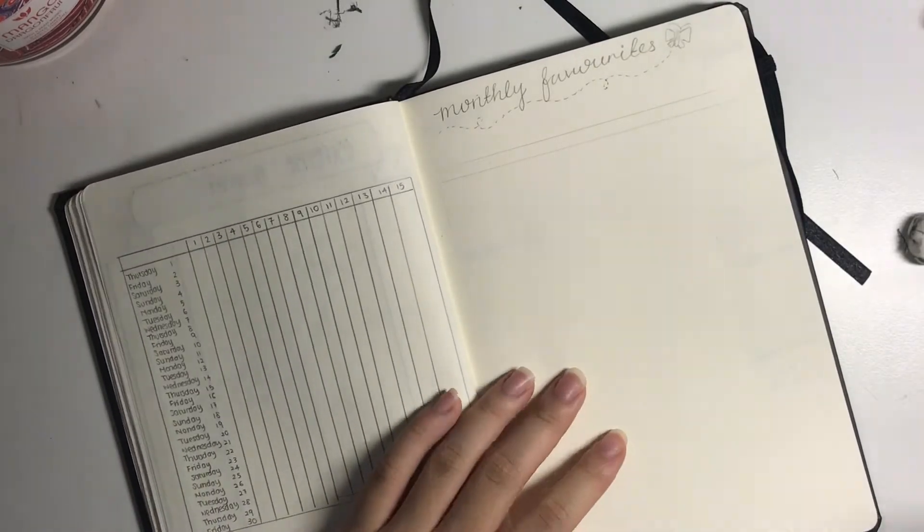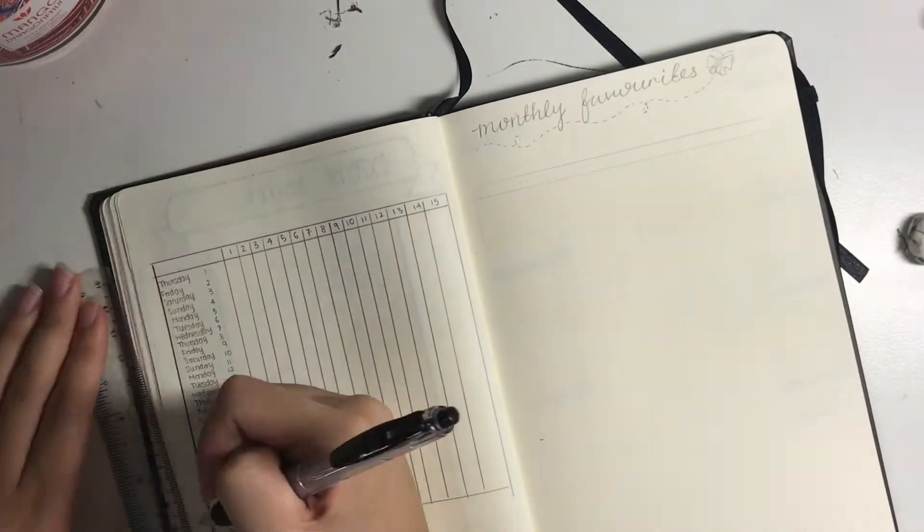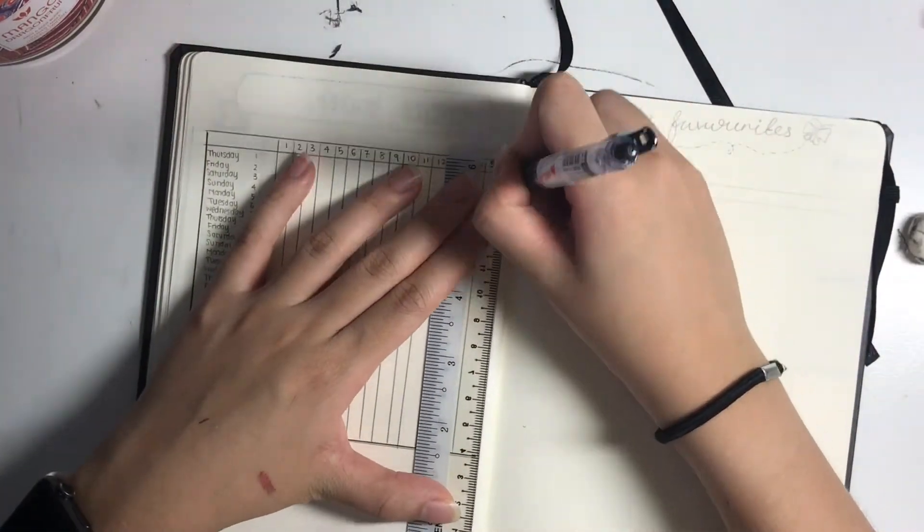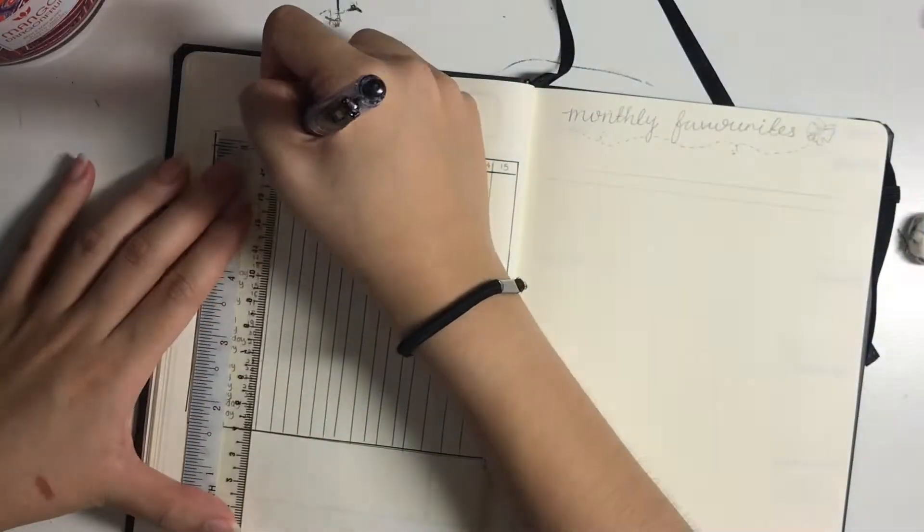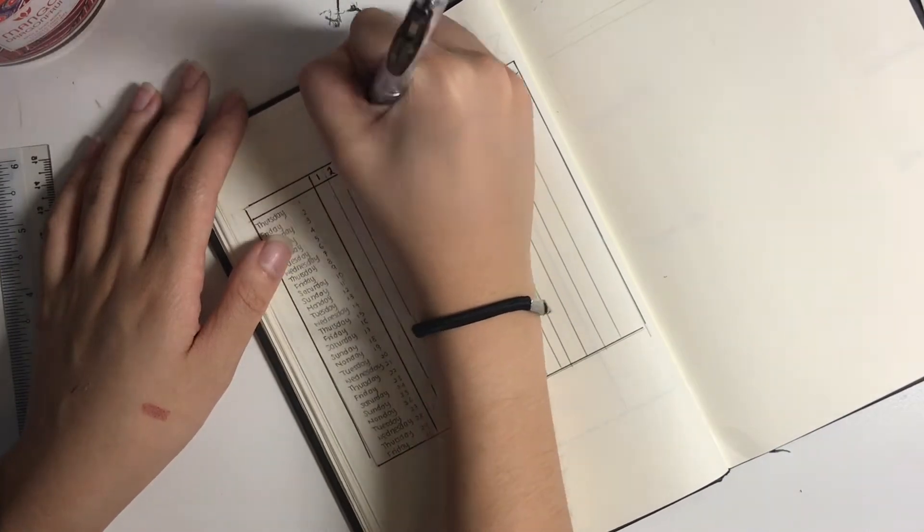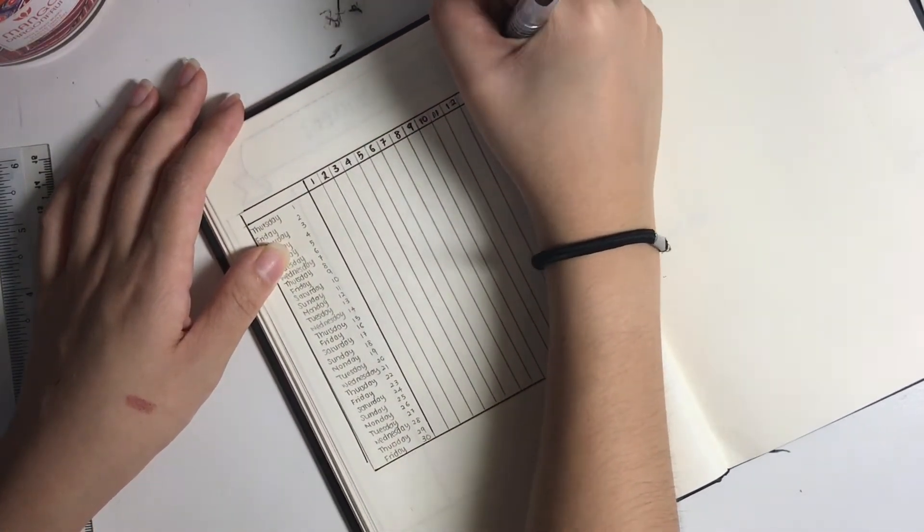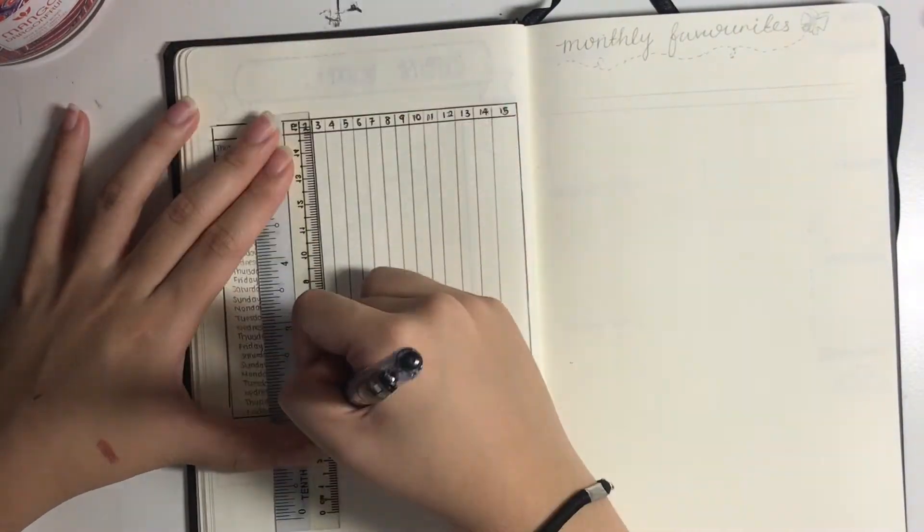And now we're moving on to my sleep tracker. I've just realized I completely forgot to include a title for sleep tracker. Anyways, you guys know how this works - maybe you do, maybe you don't - but I'll explain it. So it's just a box. It says all the days and all the dates on the left column, and on the top row it goes 1, 2, 3, 4, 5, 6, 7, 8, 9, 10, 11, 12, 13, 14, 15, and that represents the number of hours.